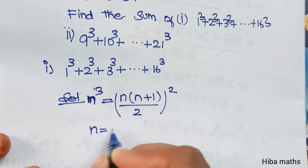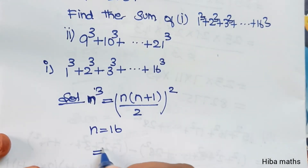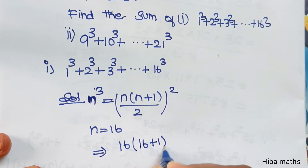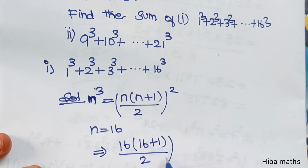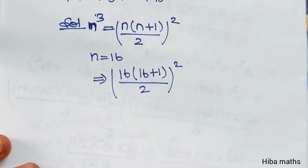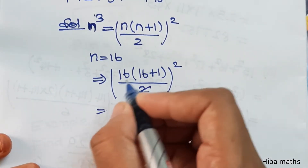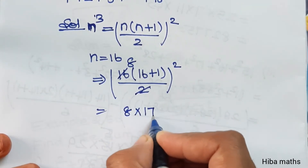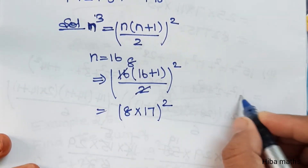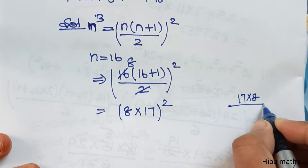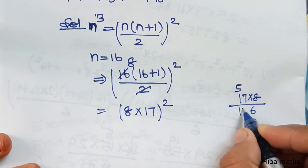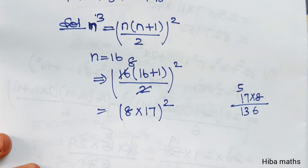For n equals 16: 16 into (16 plus 1) divided by 2, that is squared. In the table, 2 eights are 16, so 8 into 17 equals 136.